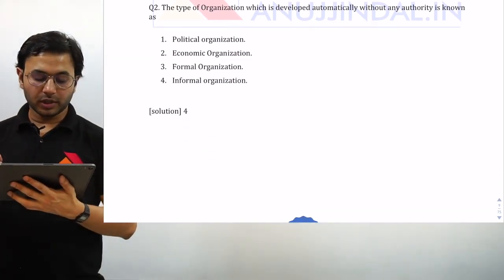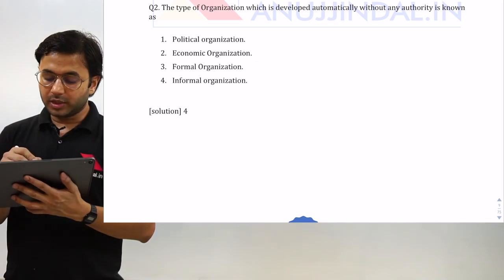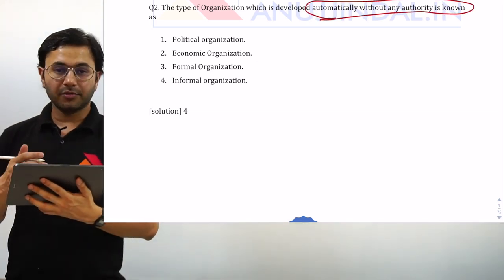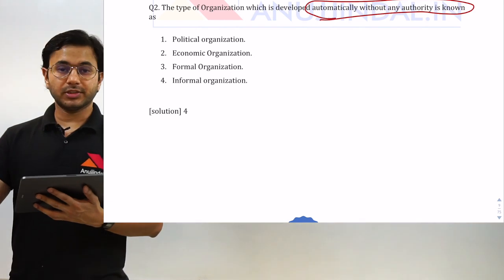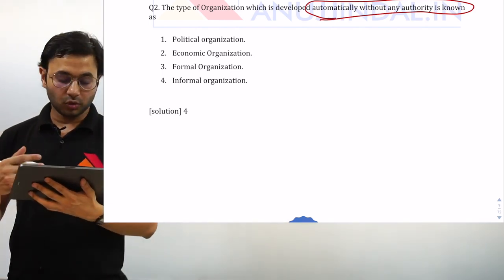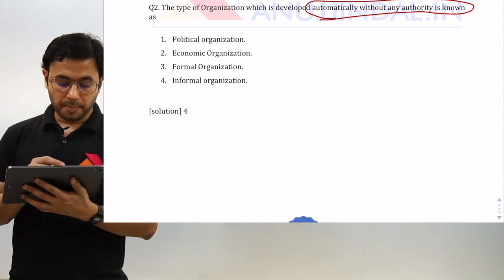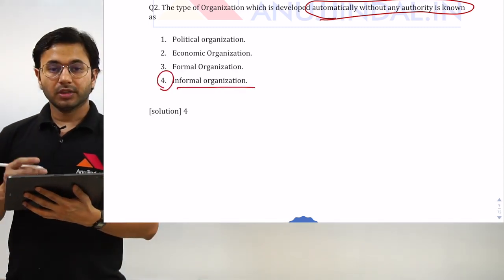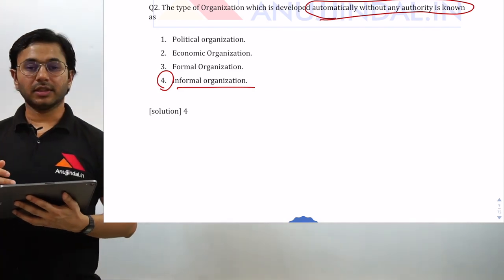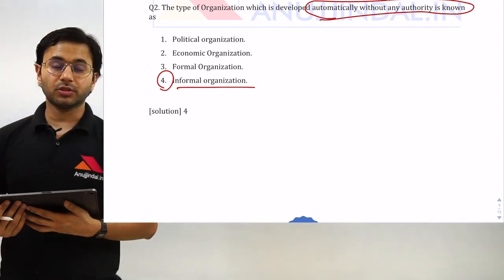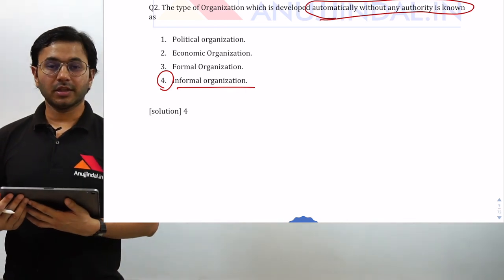Next question: the type of organization which is developed automatically without any authority is called — I just gave you the example of such an organization being created on a beach in Mumbai. The answer is option 4: informal organization. That is all for today's session. In the next session, we will take it forward and talk about more things related to organization theory. Till then, all the very best, take care.